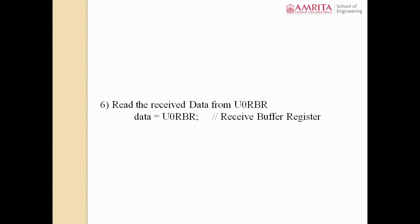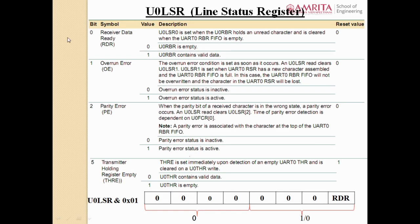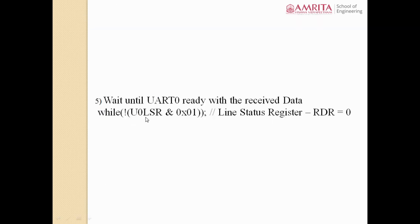How will you identify whether reception is over? You can identify that reception is over by checking the status of the receive shift register. Once the whole data has entered the shift register, the shift register will be full. Once it is completely filled, you can identify that reception is over. You should have a status bit to check the status of the receive shift register.